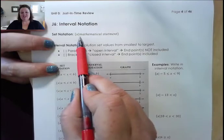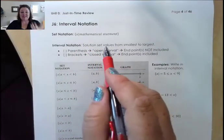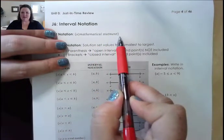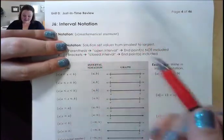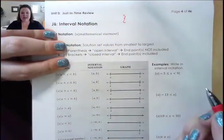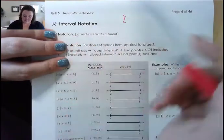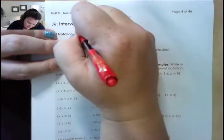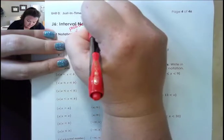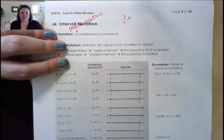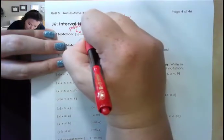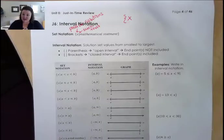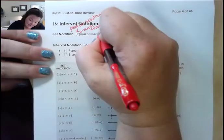When we look at set notation, this is a fancy way of saying my answers are these numbers as long as they satisfy something. We write it with curly braces. That is set notation any time we use these squiggly brackets. Then we say x, or whatever our variable is — the set of all possible x's. This little vertical line right here represents 'such that.' So x could be anything such that it satisfies something.